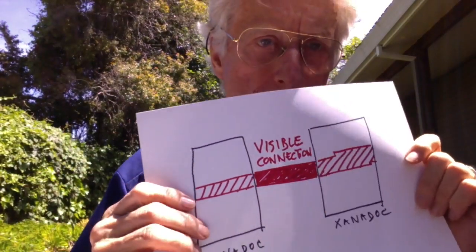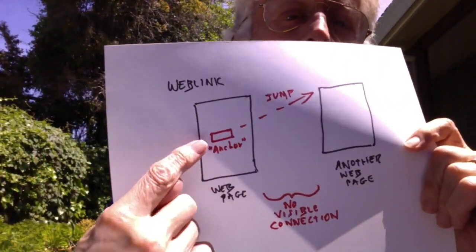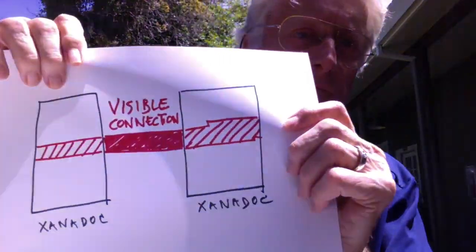So in the first video of this series, Xanadu Basics I-A, I explained that the central concept is visible connection. I never thought of explaining it that way before. I'm trying to build interactive document software you can use to read and write visibly connected documents. These connections are completely different from the jump links of the World Wide Web, where you have an anchor on the website and you jump to something else — that's web links, that's all you get. On the web, there is no visible connection between pages.